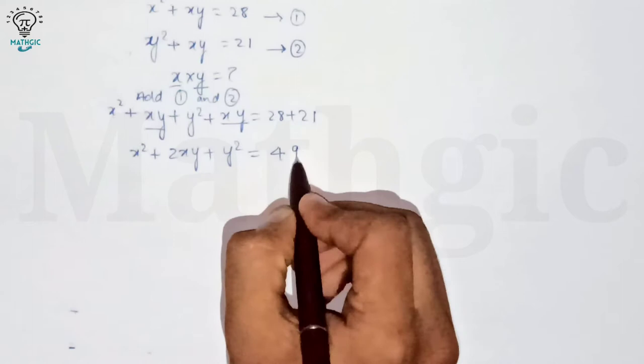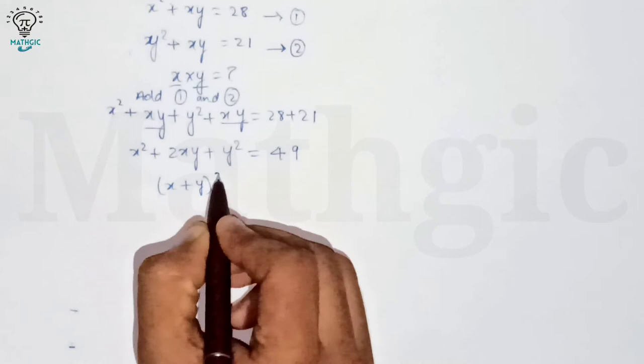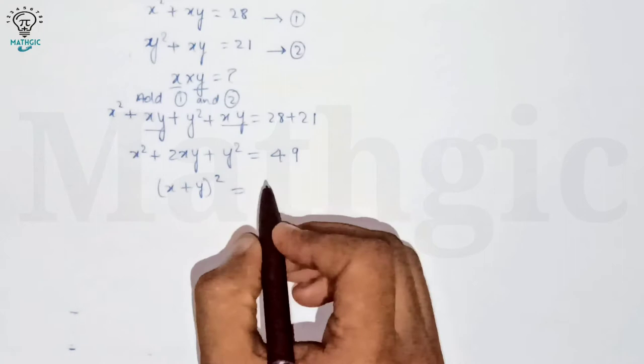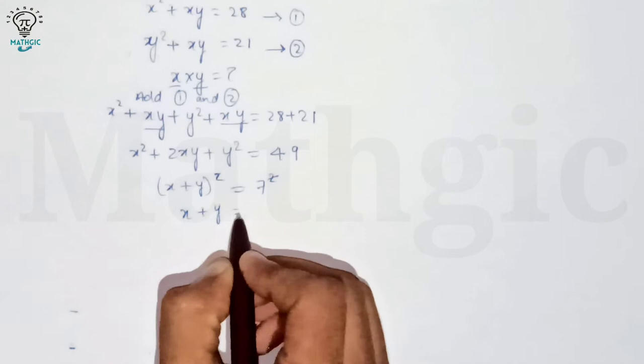That gives us x squared plus 2xy plus y squared equals 49. This is in the form of (x plus y) whole squared. And 49 can be written as 7 squared. The squares cancel, so x plus y equals 7. Let's call this equation number three.